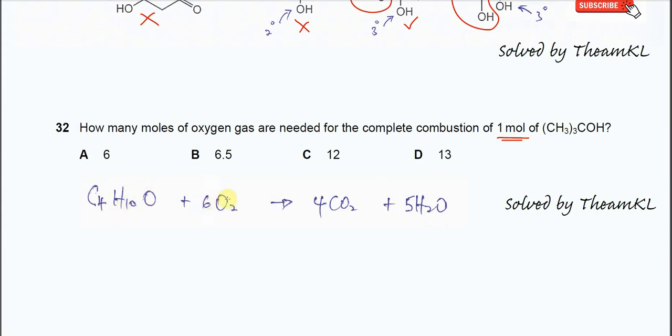With oxygen forms CO2 and H2O. So remember to balance it. First, you need to balance carbon number. So here times 4. Make sure this one is one mole. So 4 carbon here, so here times 4. 10 hydrogen, so here times 5.